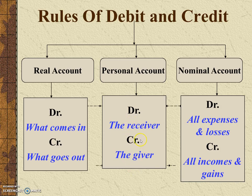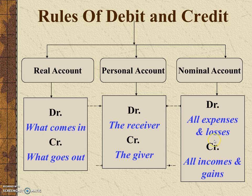The person who receives something has to be debited, and the person who gives something has to be credited. For the nominal account, the rule is: debit all expenses and losses, and credit all income and gains.